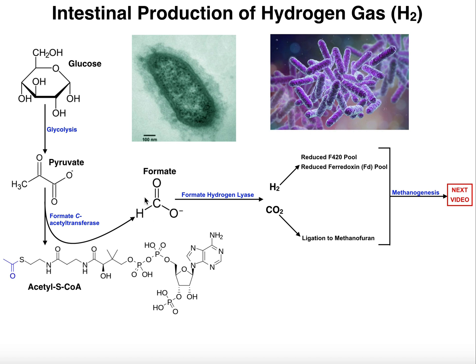Formate is a precursor to two molecules: hydrogen gas and carbon dioxide, which are going to be used in methanogenesis. The enzyme that catalyzes this breakdown of formate is formate hydrogen liase, and one of its products is carbon dioxide. CO2 — including that produced from formate breakdown — can be ligated to a coenzyme used in methanogenesis called methanofuran.